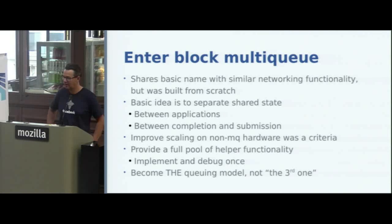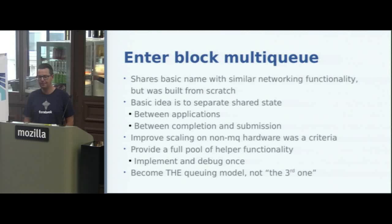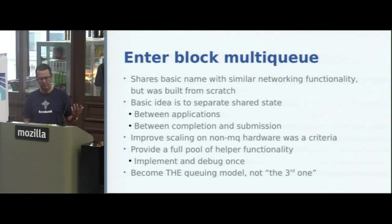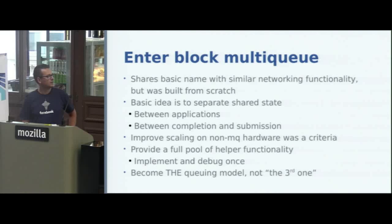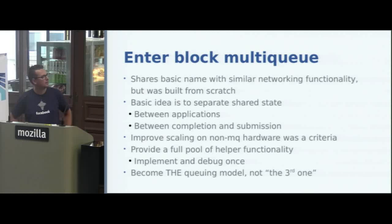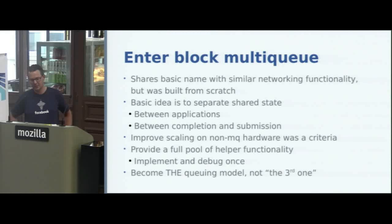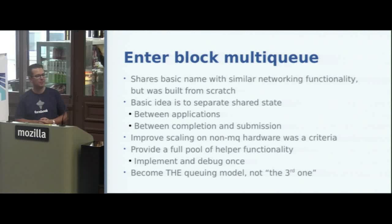It was clear we needed a new model — this is where block multi-queue comes into the picture. It shares the name with similar functionality in the networking stack. Networking had a huge head start attacking packet rate issues, and they came up with an elegant solution. There's historically a lot of similarities between how networking and storage handle operations, and there's been code and ideas shared back and forth — mostly from networking to block storage, though we've also invented a couple of primitives that ended up in the networking stack.